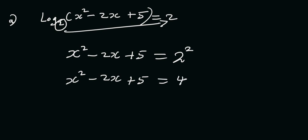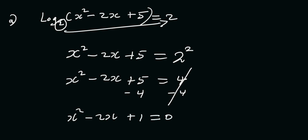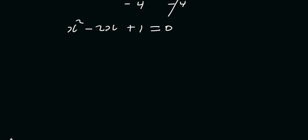This is already a quadratic at this point. So let's subtract 4 from both sides. This will become x²-2x and 5-4 gives you 1, so we have x²-2x+1 equal to 0. Now we need to find two factors of +1 such that when we add them together we get -2. Those two factors are -1 and -1, because (-1)×(-1) is +1 and (-1)+(-1) is -2.